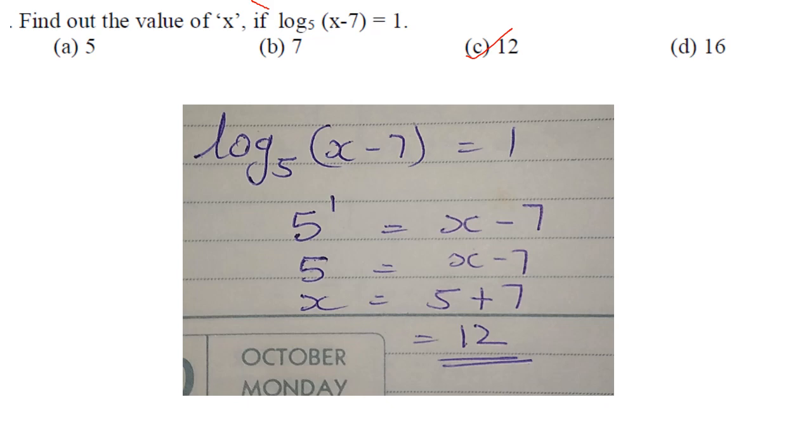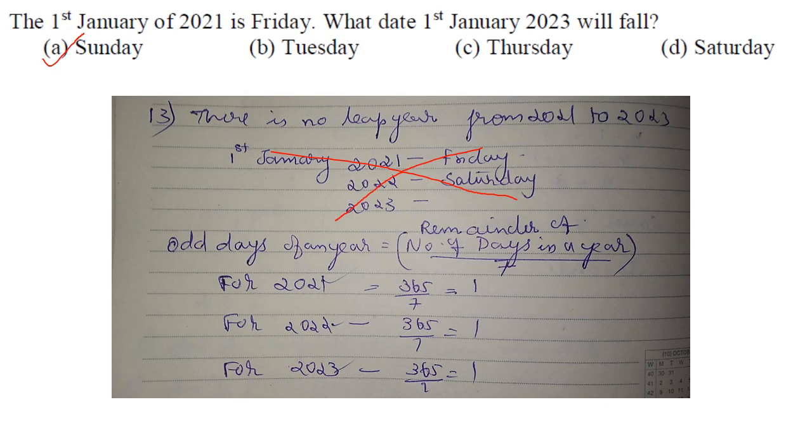1st January 2021 is Friday, what day will 1st January 2023 fall? There is no leap year from 2021 to 2023. Odd days of a year: 365 ÷ 7 gives remainder 1. So for 2021, 2022, and 2023, we have 1+1+1 = 3 odd days. Given day is Friday, so Friday + 3 days = Sunday. Answer is option A.